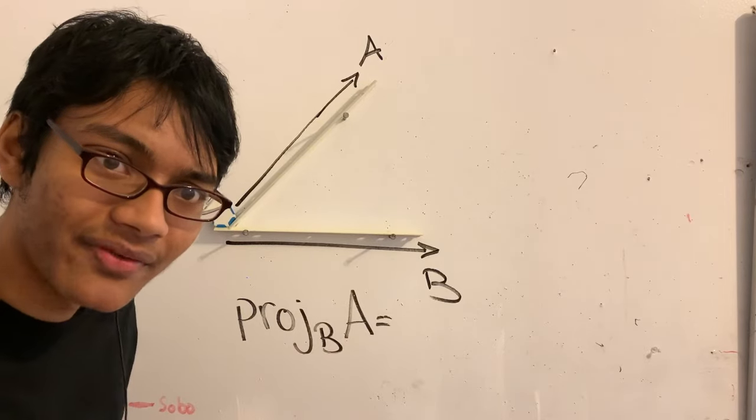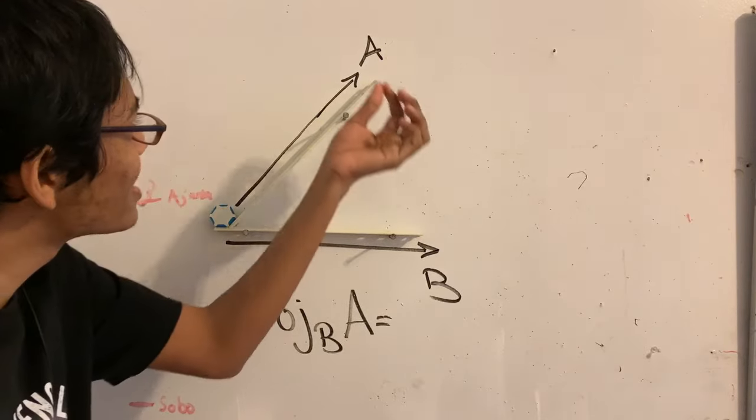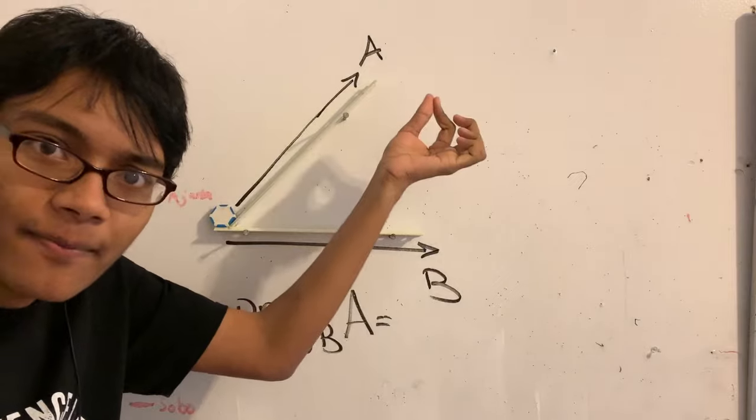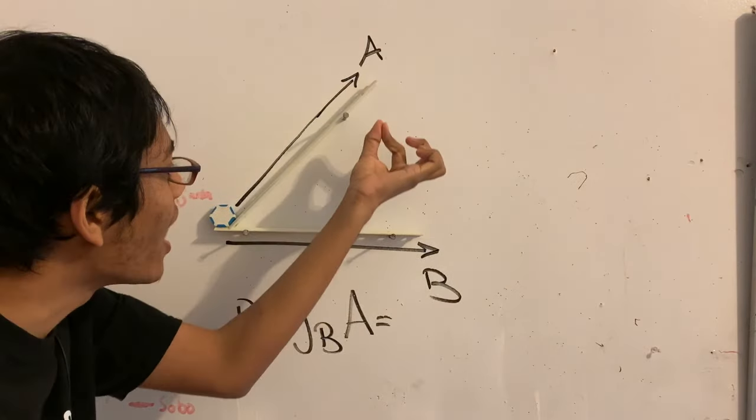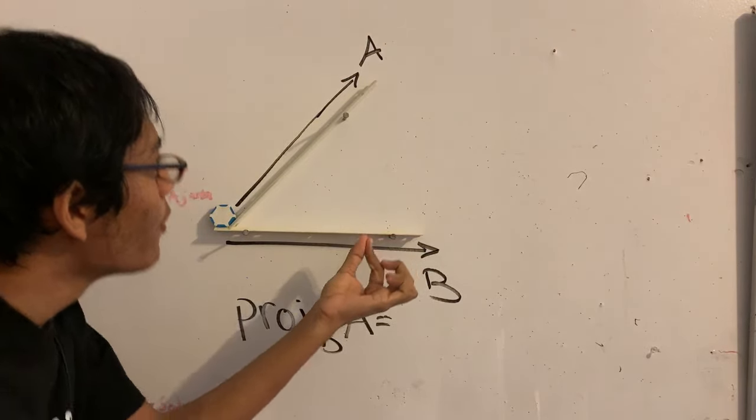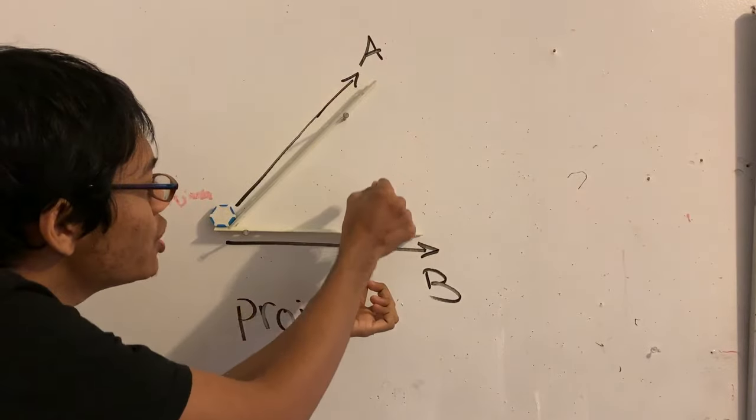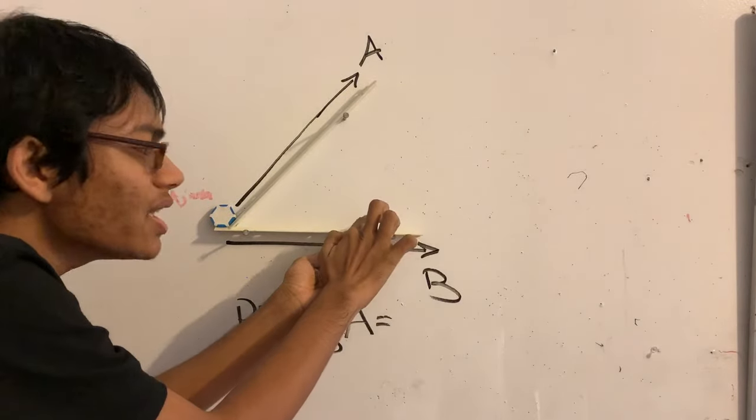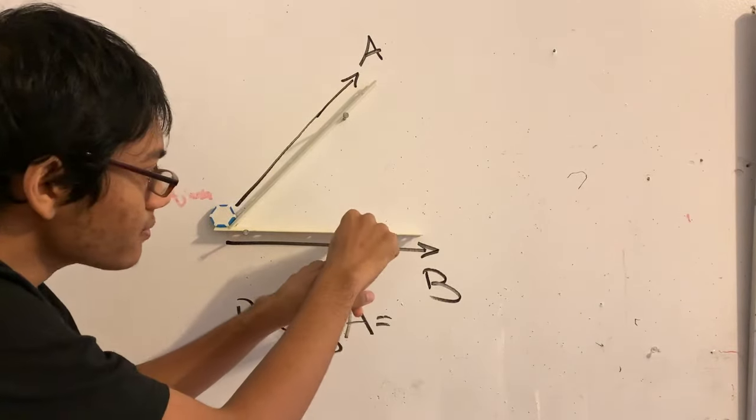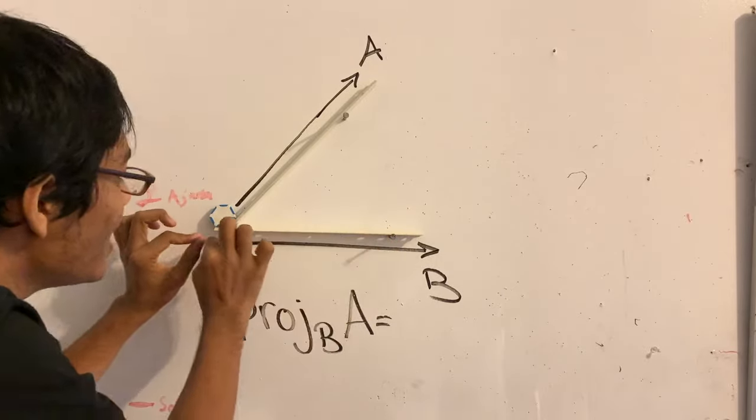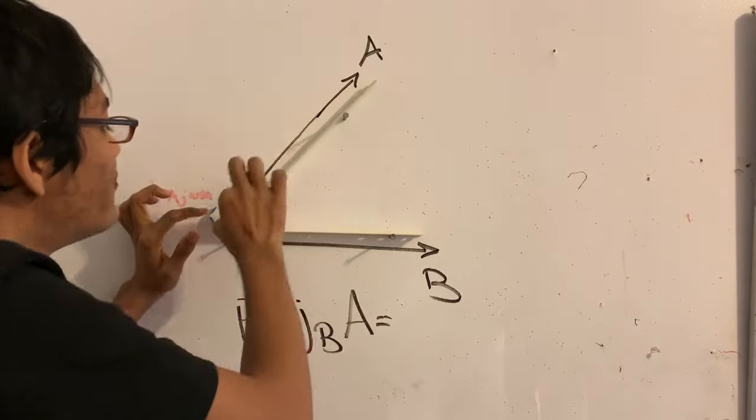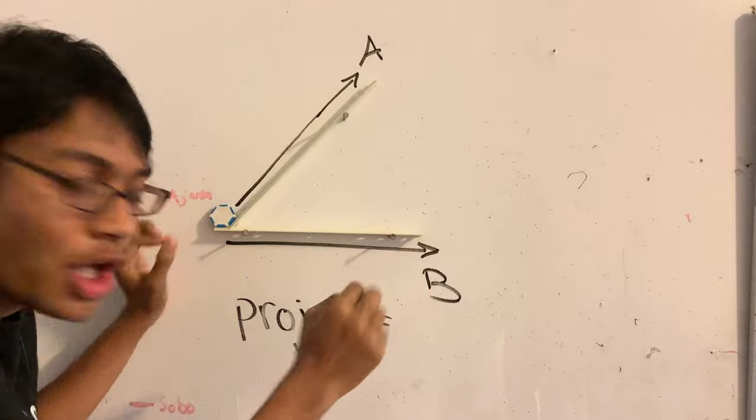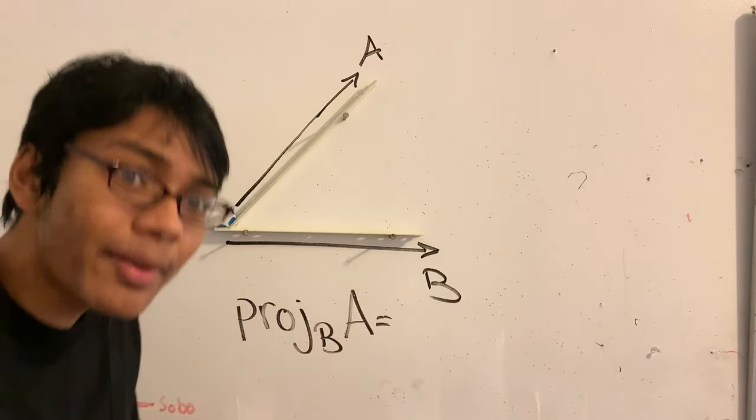But here's another way to think of it. Imagine there was a street lamp on top of vector A and it was shining down on vector A. Well, it would shine down in just the right way so that a bit of the light would pop up here. And that bit of the light would be the shadow of this vector A onto vector B. So when we say projection, we're really talking about shadows.